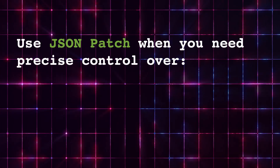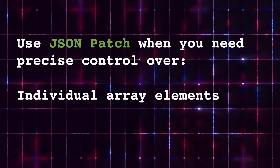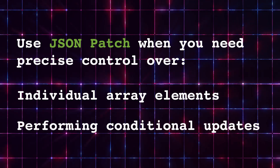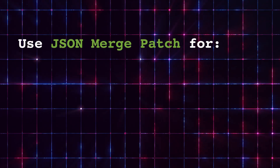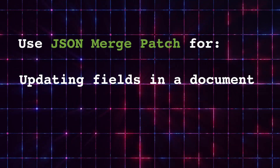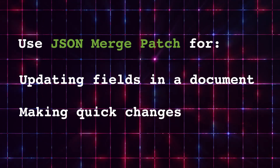So when should you use them? Use JSON Patch when you need precise control, like updating individual array elements or performing conditional updates. Use JSON Merge Patch for simpler cases, like updating a few fields in a large document or when you just need quick changes. Both have their strengths, depending on the complexity of the changes you want to make.